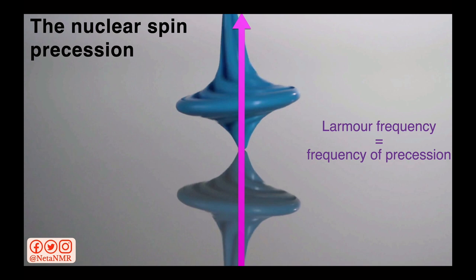Another important thing to know about nuclear spins in an external magnetic field is that, besides the fact that they are aligned with the magnetic field, they also precess around the direction of the magnetic field, with a frequency that is dependent on the magnetic field. This precession frequency is called Larmor frequency.